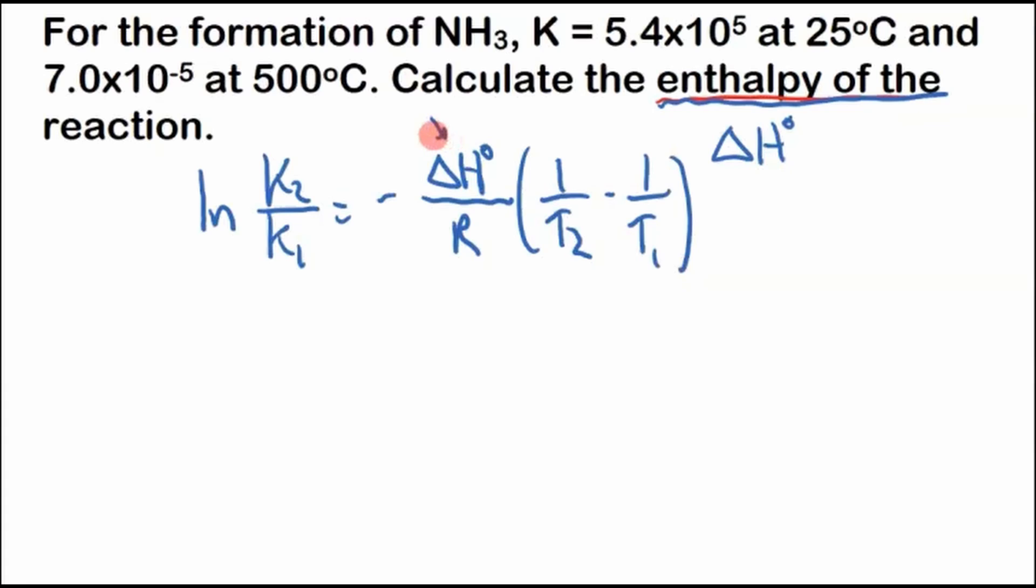So we can plug things in or rearrange. If we solve for ΔH, if we multiply both sides by negative and by R, we would get ΔH°(1/T2 minus 1/T1) equals negative R ln(K2/K1). I'll do this in a couple steps.